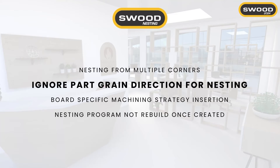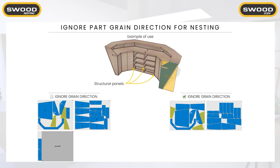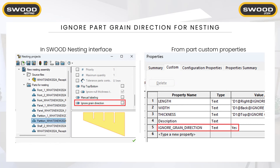Then another option: any-angle part grain direction in the nesting project. For structural panels or smaller panels where you don't care about grain direction, you can now set that option and the panel will be nested at a different angle for better optimization. You can set this information either in the SWOOD Nesting interface in the part for nesting folder, or from a custom property.